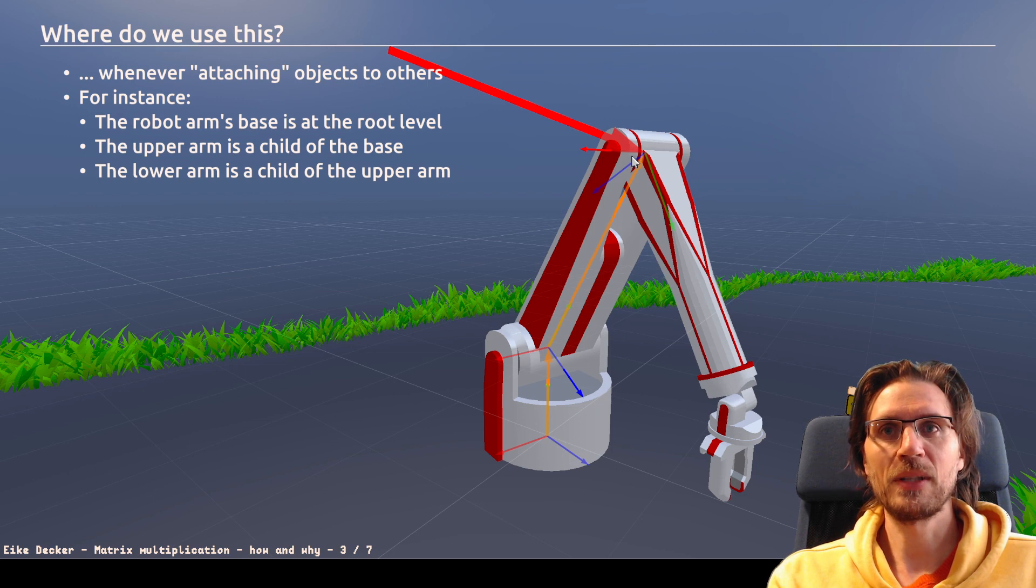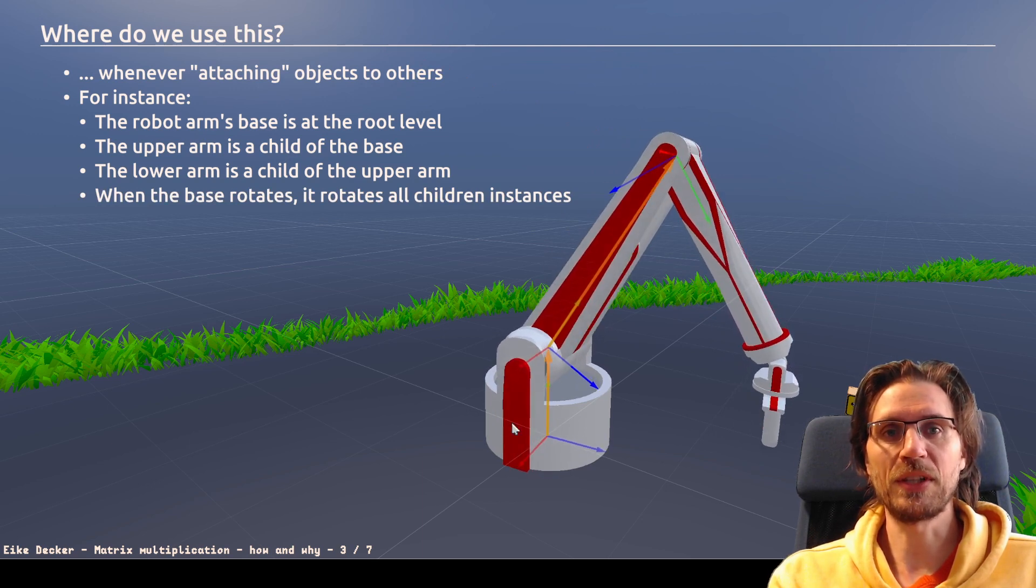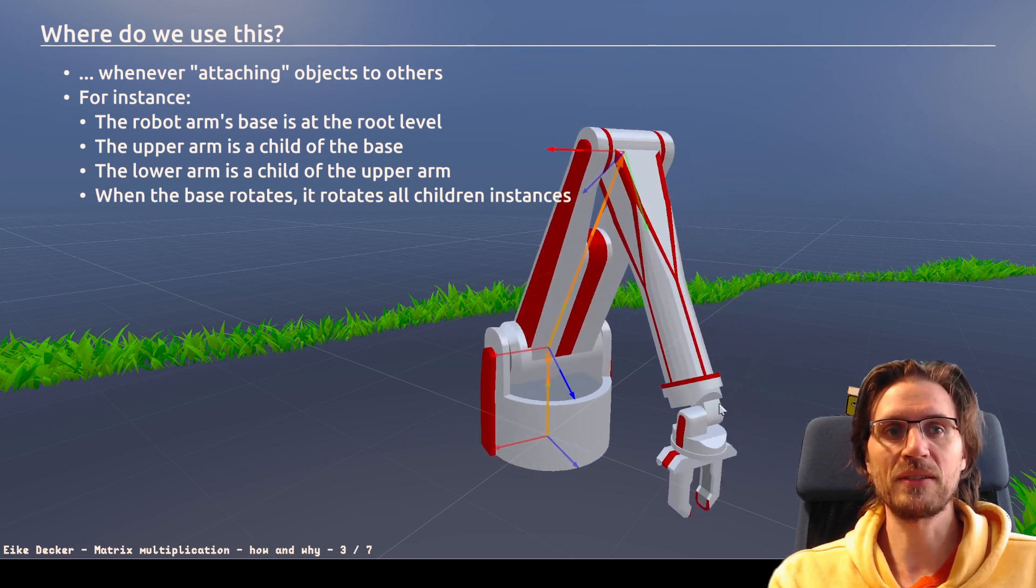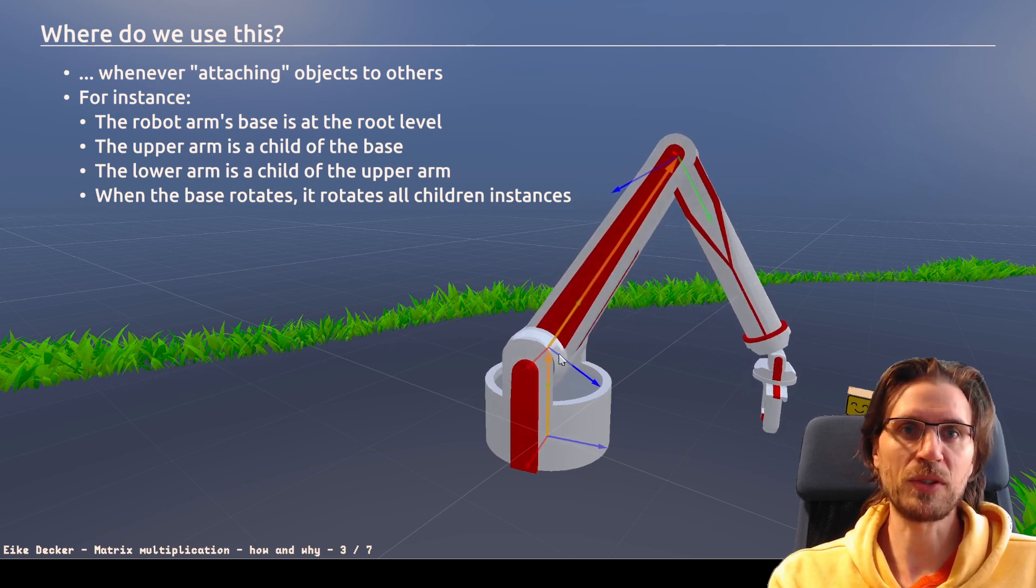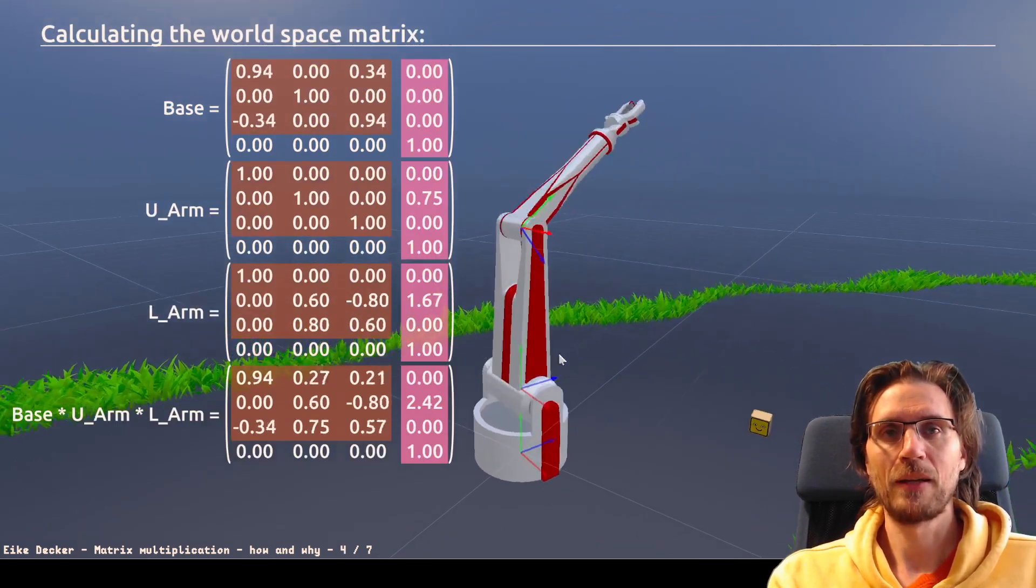And the lower arm is a child of the upper arm. And it's located here and rotated differently. And naturally, when we rotate the base, we will rotate everything that is attached to the robot. And all this is done through matrix multiplications.